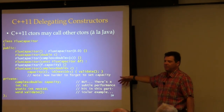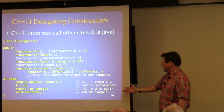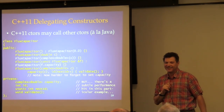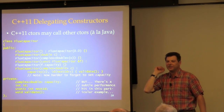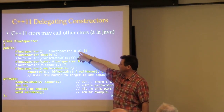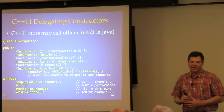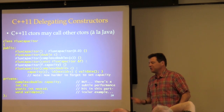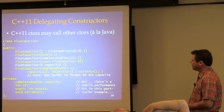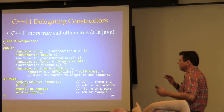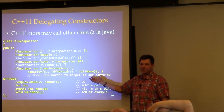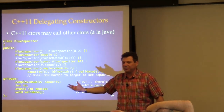However, there's a subtle performance issue this introduces. You're calling validate when you don't necessarily need to — for example, when you default-construct, you don't need to validate. So if you're willing to pay the price of calling validate a few extra times, great. Otherwise, you can write your own default constructor manually. It's not a silver bullet — it's one more tool in the arsenal.